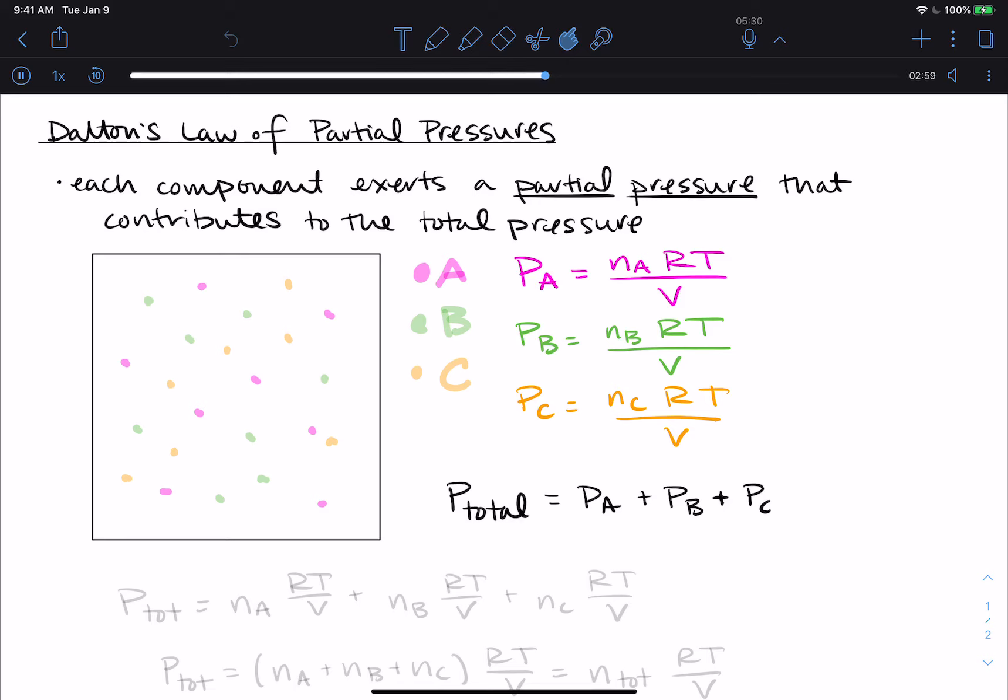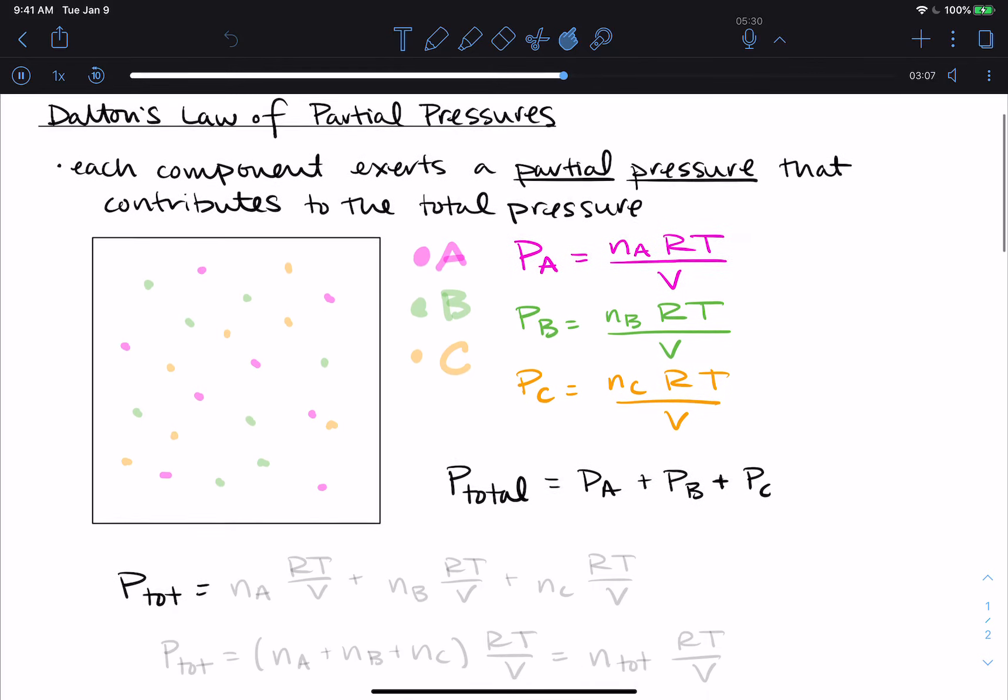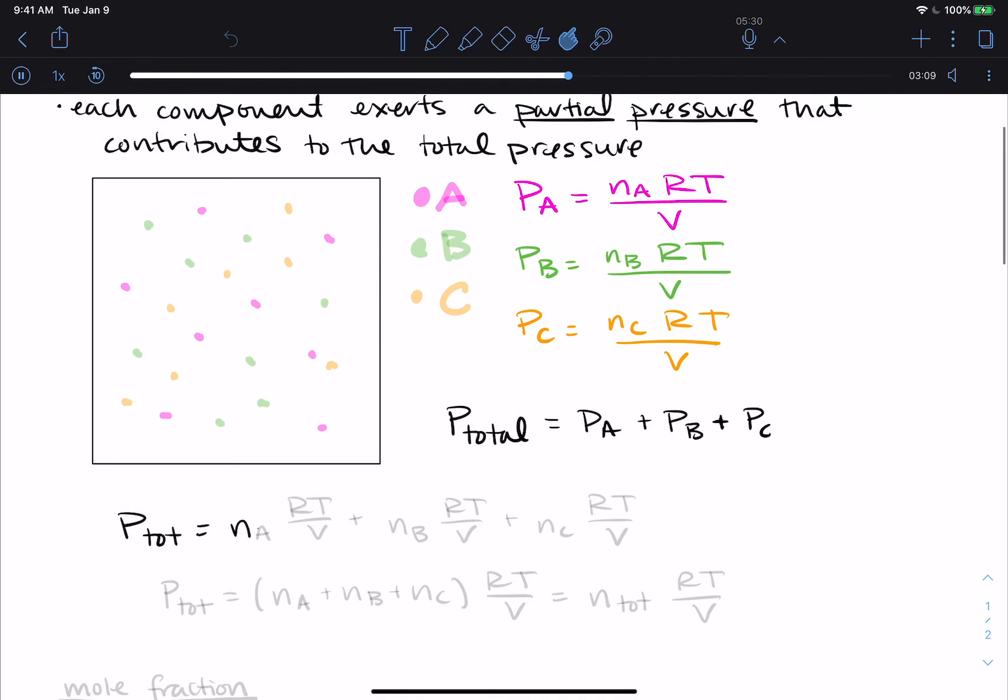Now for our full sample, if we do just a little bit of algebraic substitution, this means that the total pressure is also equal to the number of moles of A times RT over V, because this was how we calculated the pressure of A, plus the number of moles of B times RT over V, plus number of moles of C times RT over V.